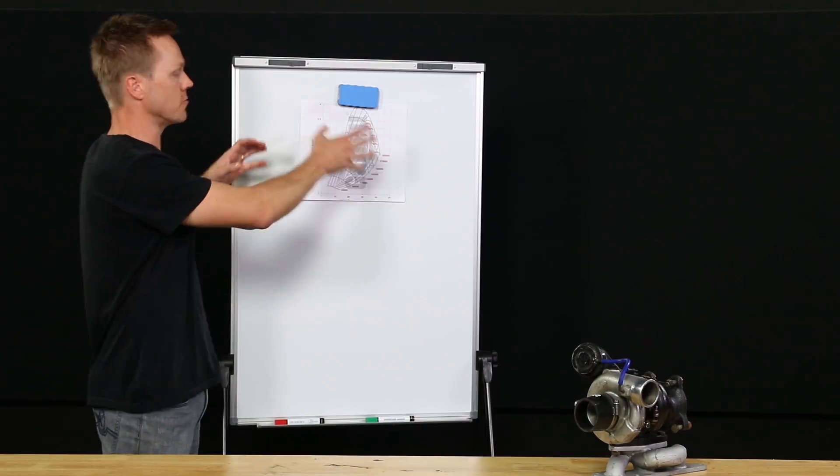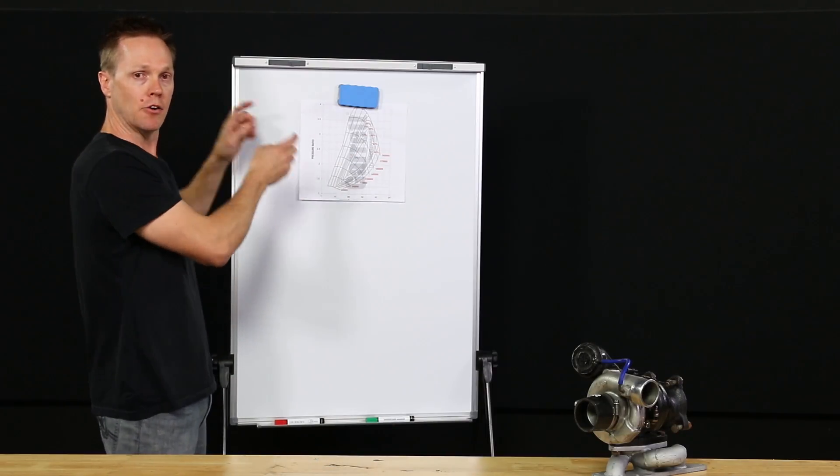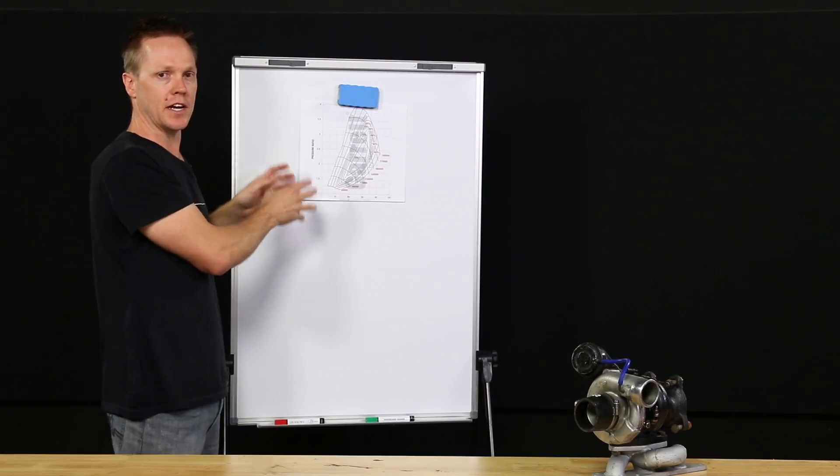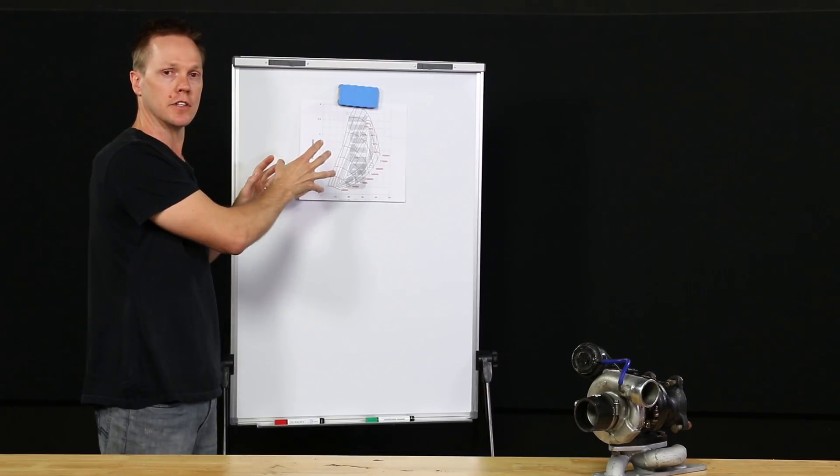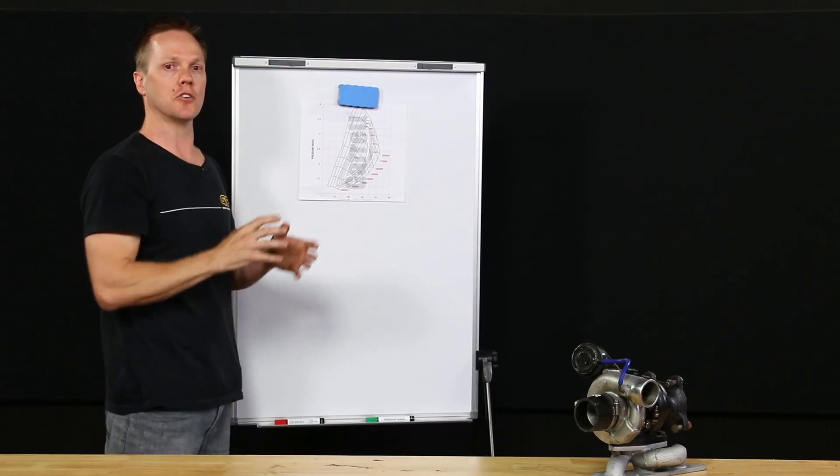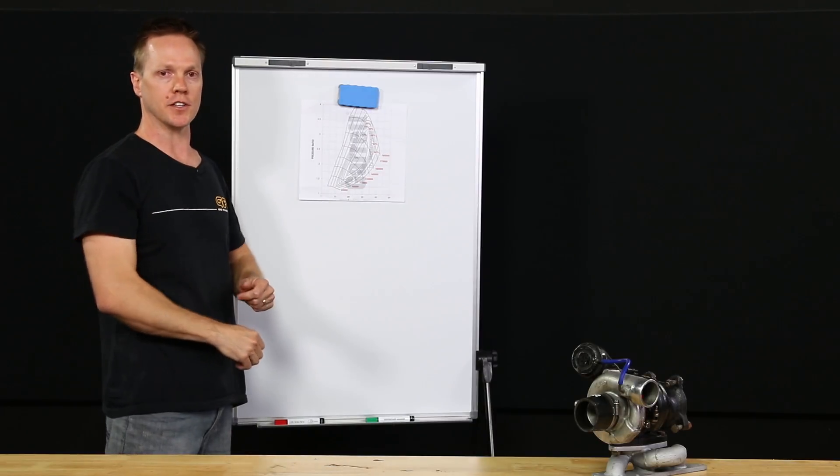So that's a quick overview on how to read a turbo compressor map. Now obviously there's a lot of really complicated information and formulas that go into all of this. So if this gets your turbo juices flowing, have a look online and you can find all the information that you need.